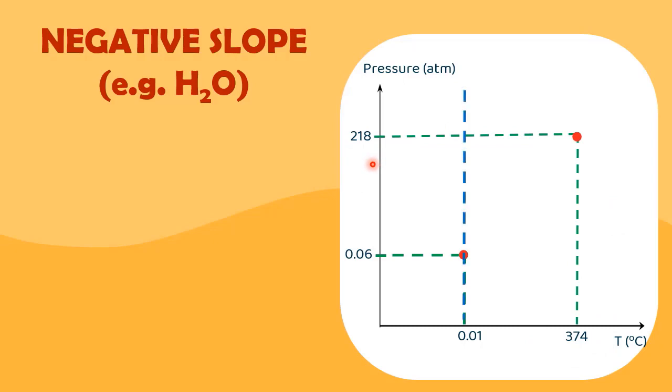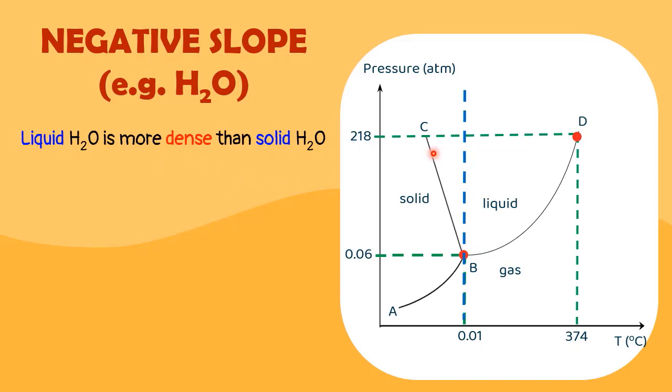If we recall the hydrogen bond made by the water molecule in solid ice, they will form an open hexagonal structure, which indicates that liquid water is more dense than the solid ice. Therefore, the slope of this line is slightly negative, meaning slanted to the left, resulting in bigger area covered by the liquid.